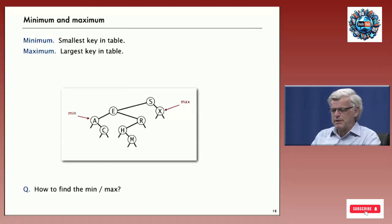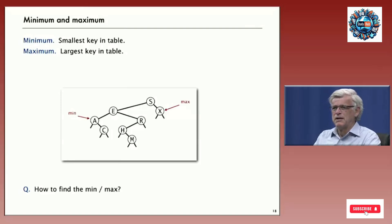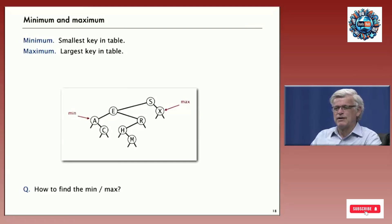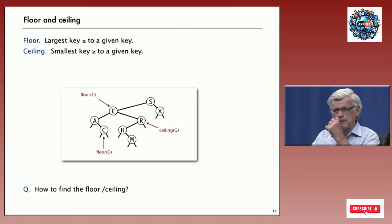Suppose we want to find the minimum key in a binary search tree, or the maximum key. Just looking at one example, you can see almost immediately what to do. To find the minimum, we move left from the root until we find a null key — that's where the smallest key in the data structure is. To find the maximum, we move right from the root until we find a null key.